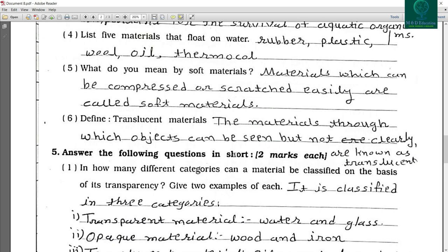What do you mean by soft materials? Materials which can be compressed or scratched easily are called soft materials. Define translucent materials. The materials through which objects can be seen but not clearly are known as translucent.